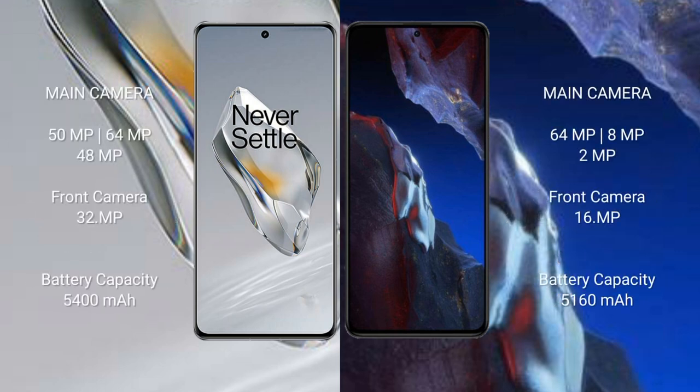OnePlus 12 features a triple rear camera setup: 150MP, 60MP, 48MP, and a 32MP front camera. Xiaomi Poco A5 Pro also features a triple rear camera setup: 64MP, 8MP, 2MP, and a 16MP front camera.